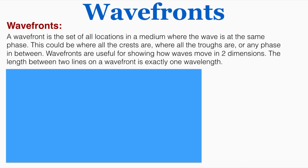Wavefronts are useful for showing how waves move in two dimensions. The distance between two lines on a wavefront is exactly one wavelength, and that makes sense because they represent where the same phase occurs — so any two places where the same phase occurs, the distance between those will be one wavelength.